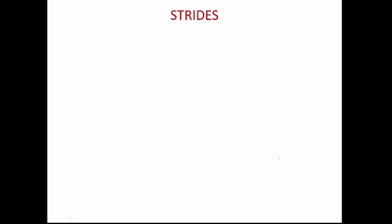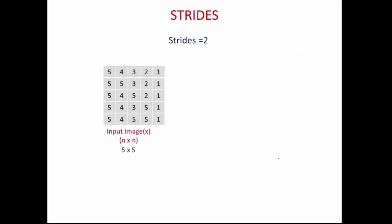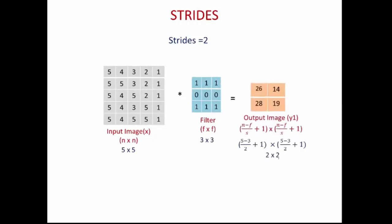Now, what happens when the stride is 2? Let me take an example where a 5×5 input image is convolved with a 3×3 filter, producing a 2×2 output image — not 3×3 as in the previous example.